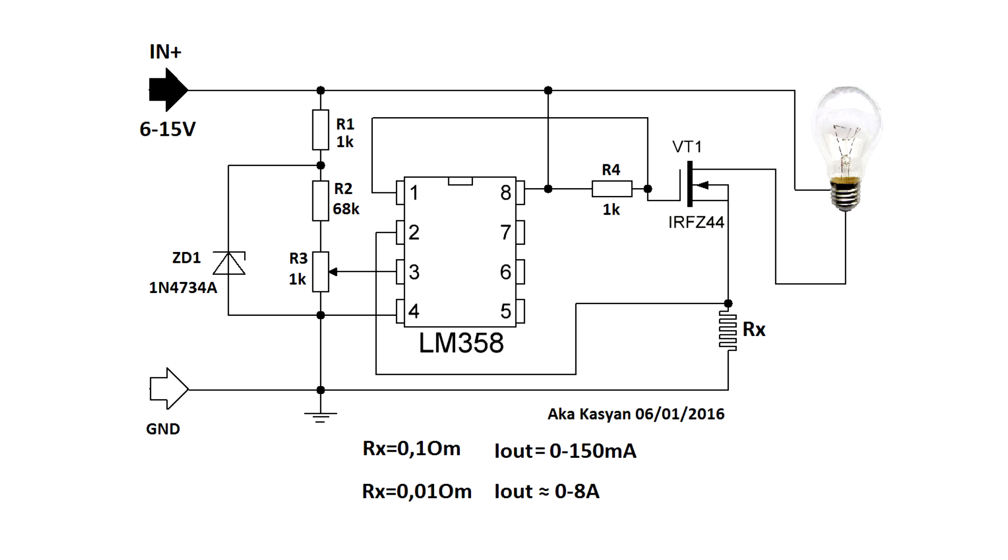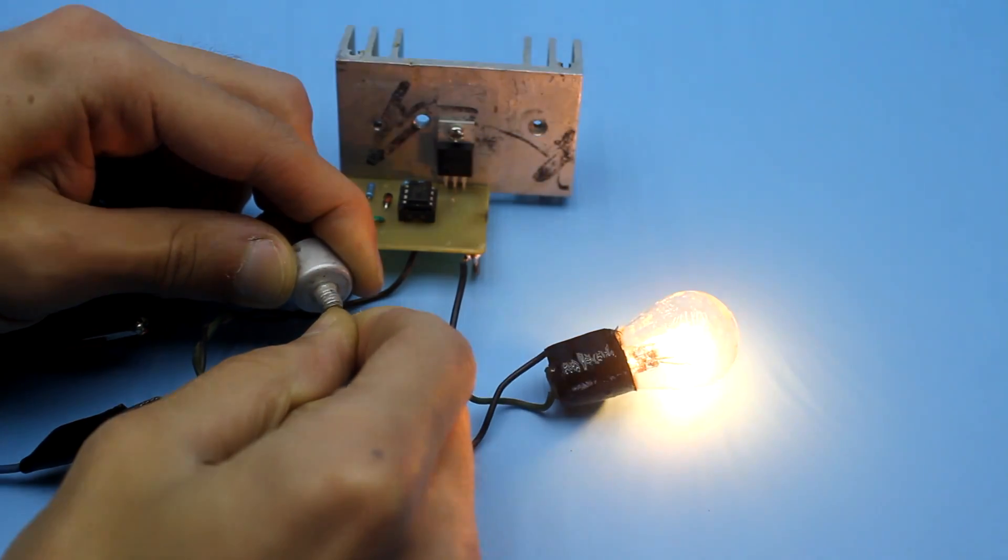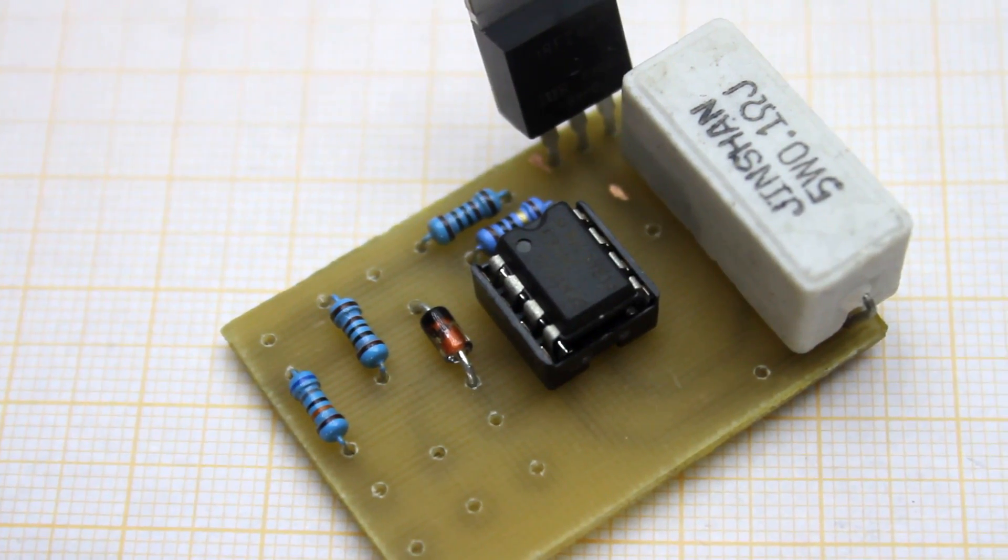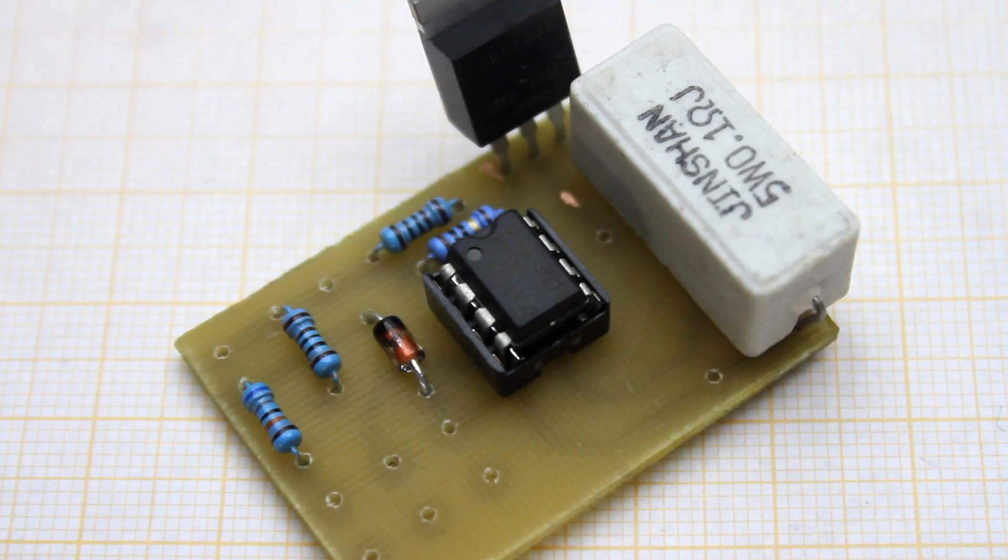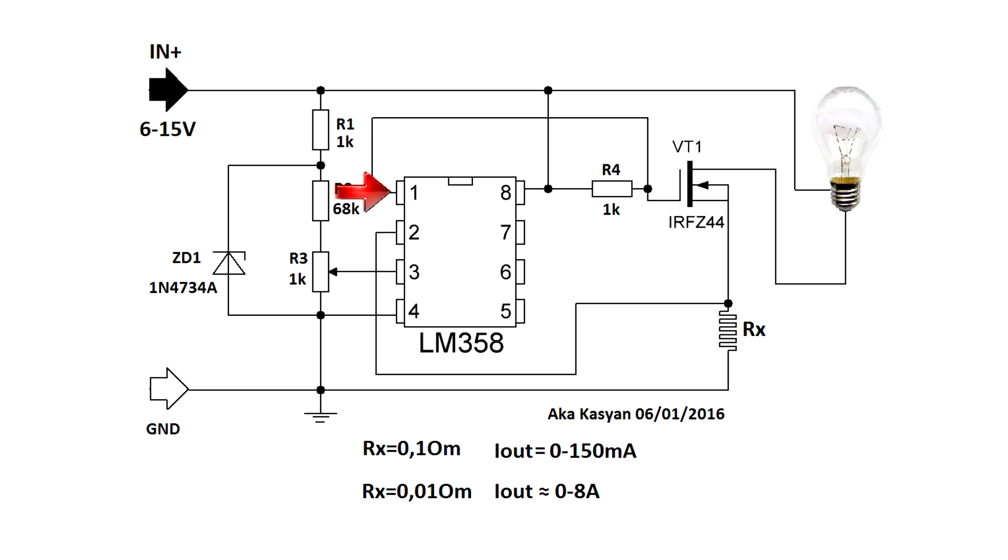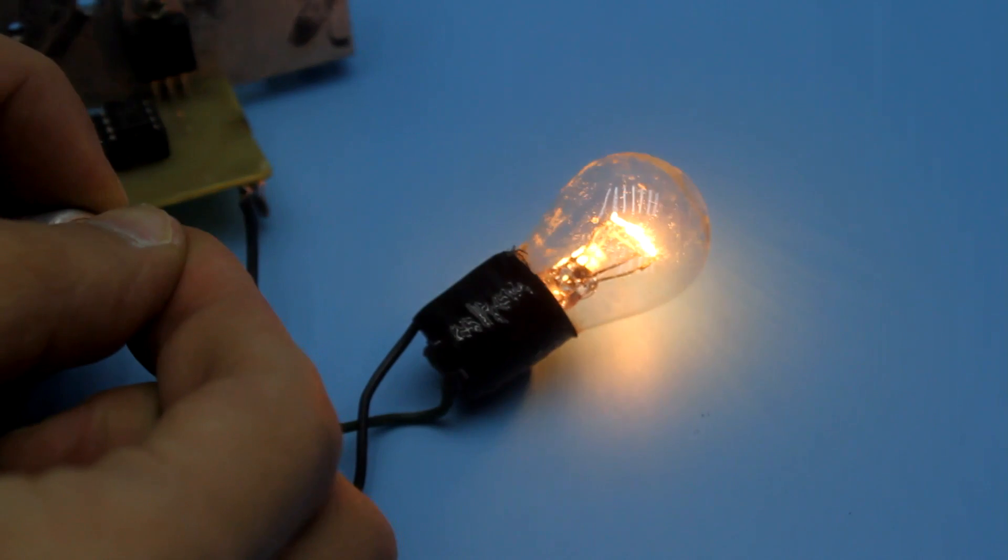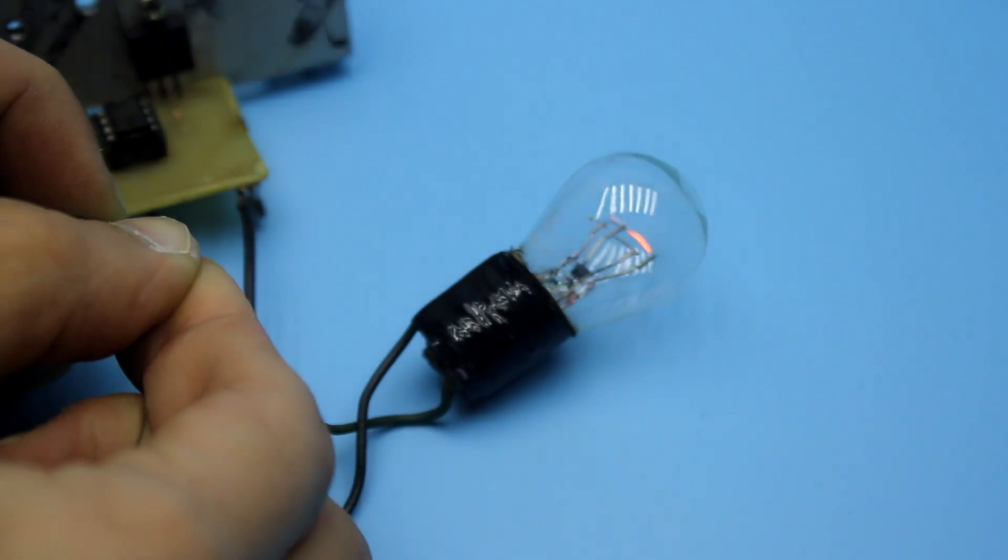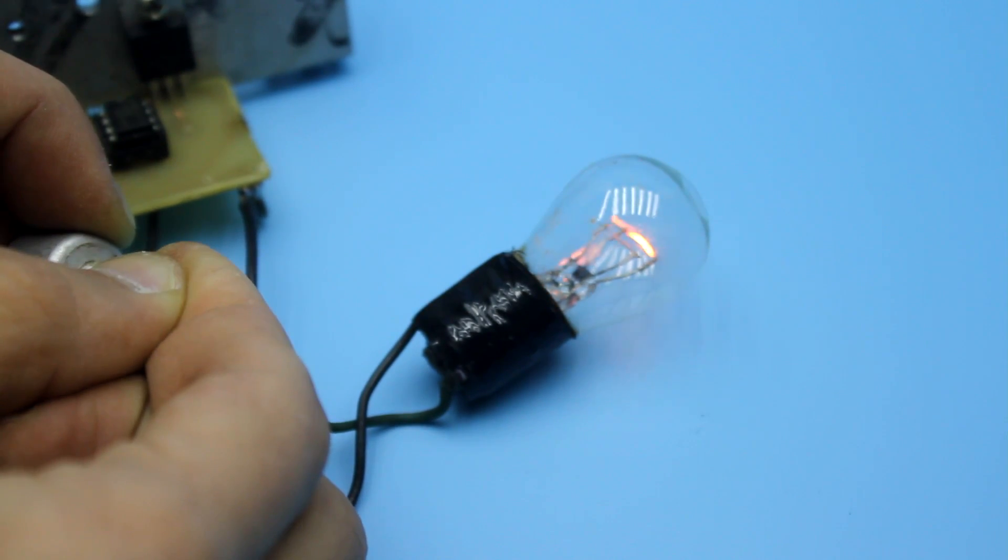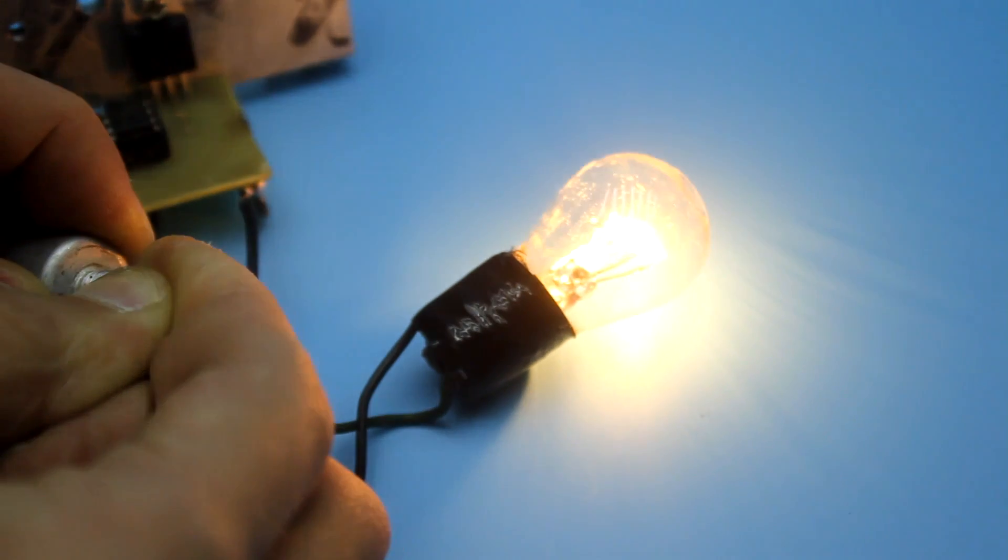The operational amplifier compares the voltage across the shunt with the reference, which is set by the Zener diode. Through variable resistor, we artificially change the reference voltage. The operational amplifier will try to balance the voltage at the inputs by changing the output voltage. The output of the operational amplifier controls a powerful field effect transistor. That is, the principle of operation differs just a little from the first circuit, except that there is a reference voltage source, namely the Zener diode.